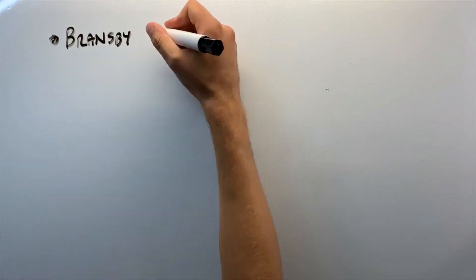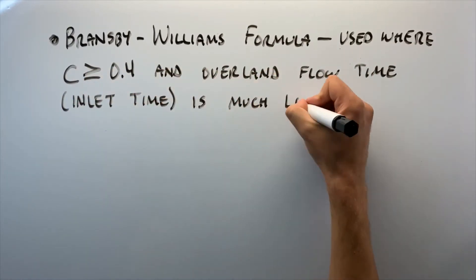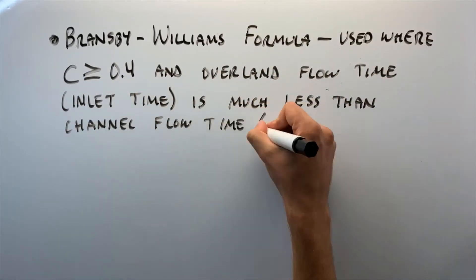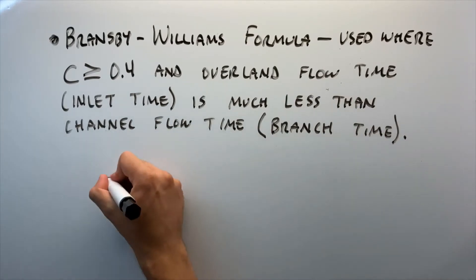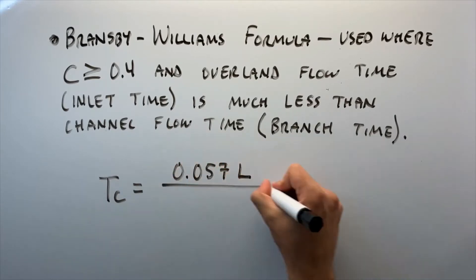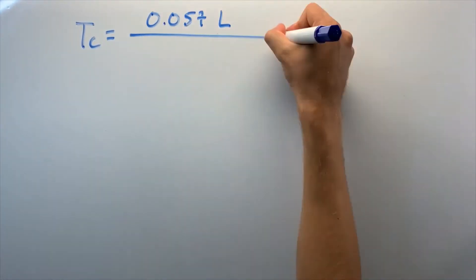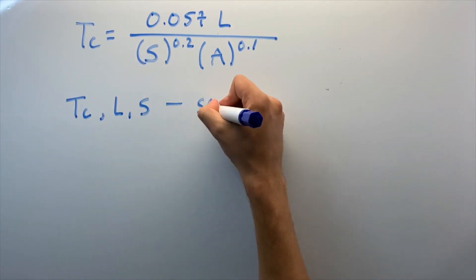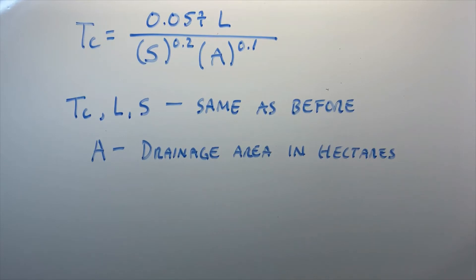We also have the Bransby-Williams formula, used where C is greater than or equal to 0.4 and overland flow time (or inlet time) is much less than the channel flow (or branch time). For this, the formula is: Tc = 0.057L / (S^0.2 × A^0.1). Tc, L, and S are the same variables as before, and A is the drainage area measured in hectares.